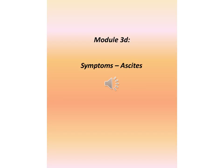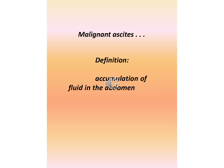Module 3D: Symptoms. Ascites — question mark malignant ascites. Definition: accumulation of fluid in the abdomen.